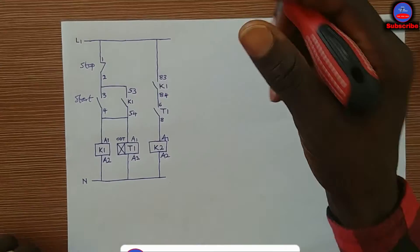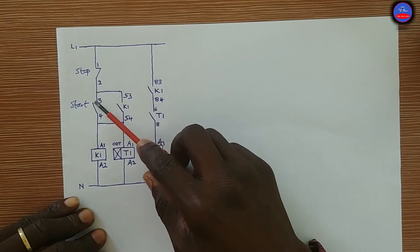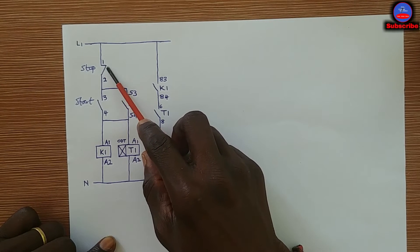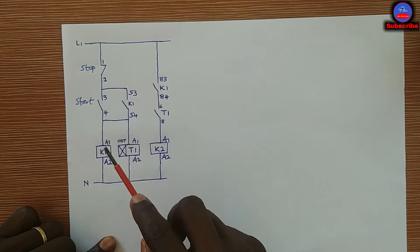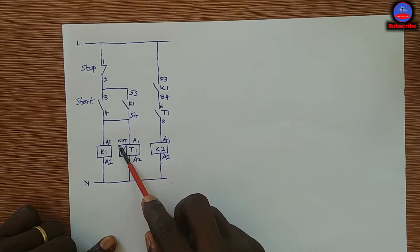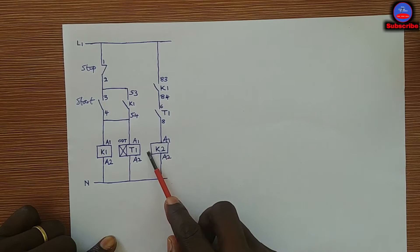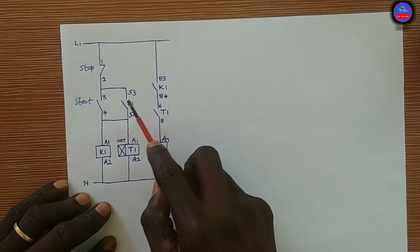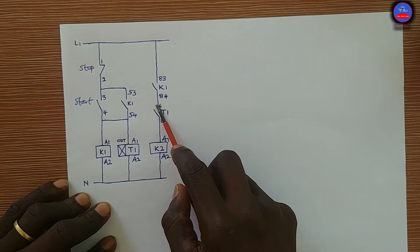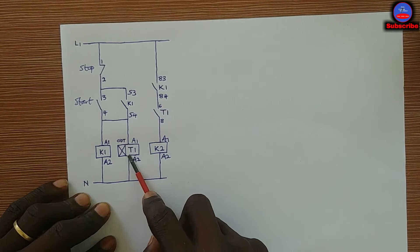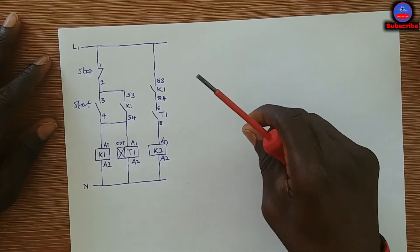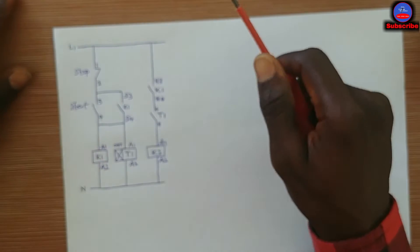So this is the circuit diagram. We have the stop push button, the start push button, Contactor 1 (K1), the on-delay timer, and Contactor 2 (K2). These contacts are all normally open contacts on the contactor, and this is a normally open contact on the timer.